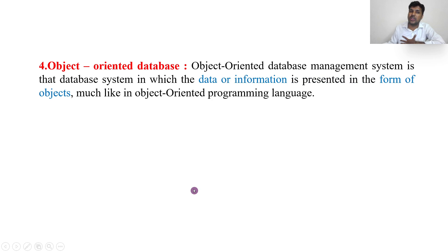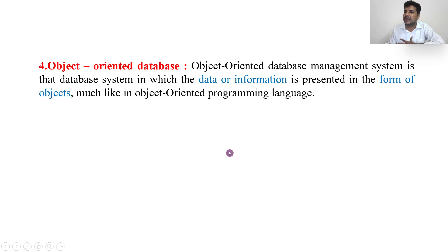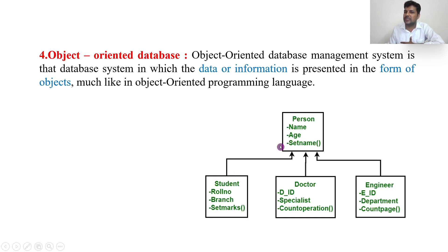Next is the object-oriented data model. Remember C++ and Java, where data is represented in the form of objects containing classes? Here also, the data is not represented in the form of tables, but in the form of objects — for example, a Person object contains name and age, and a Student object contains role number, branch, and marks. This is called the object-oriented data model.